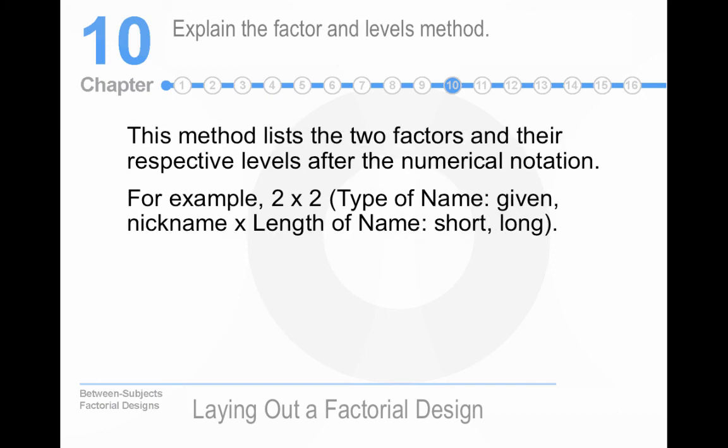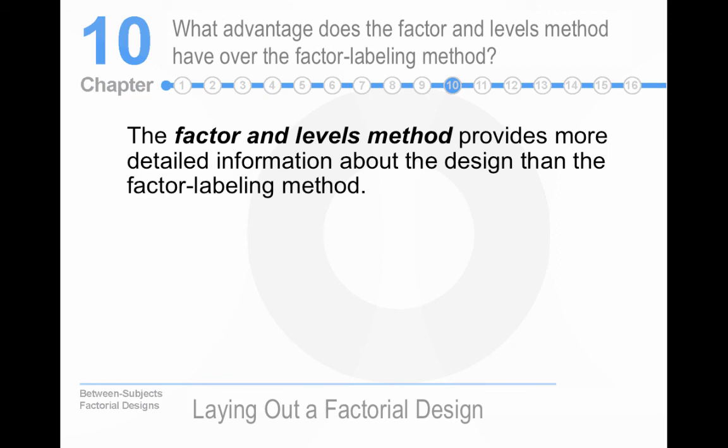Another way of labeling it would be the factor and levels method. So this would be, in the example, you can read that. For the example that I gave, it's a two by three by three, gender, male, female, age of newscaster, child, college-aged, and old, and type of news, good, bad, and neutral. Factor and levels method does provide more detailed information. So that is true.